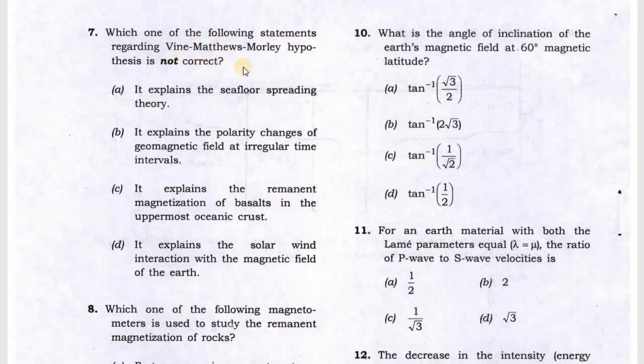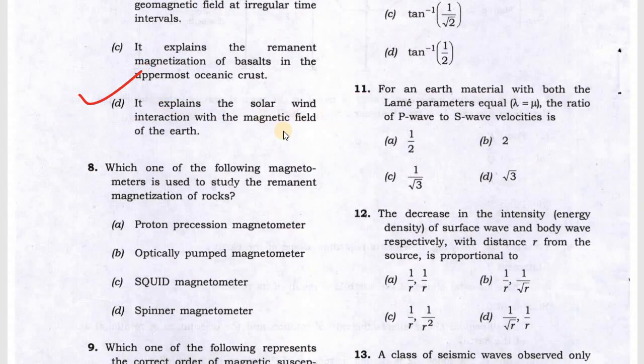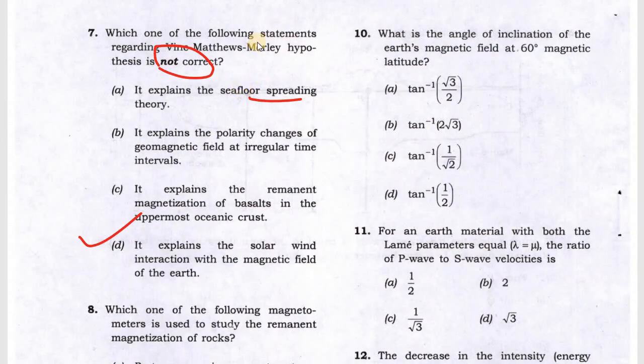Next question is the Vine-Matthews-Morley hypothesis, which is sea floor spreading. They are asking which is not correct. This is option D: they explain the solar wind interaction with the magnetic field of the earth, so this is not related to the Vine-Matthews-Morley hypothesis.